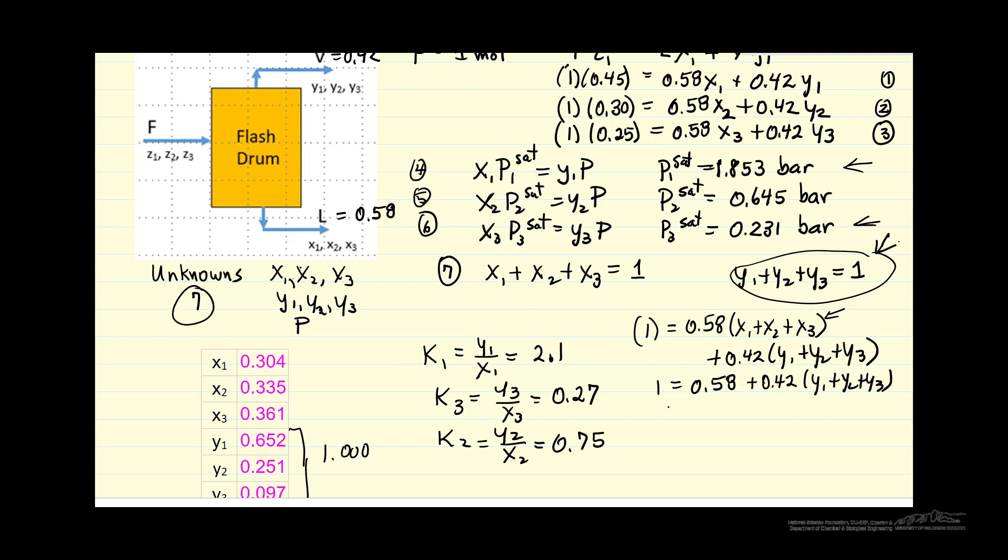And then we have 0.42 times Y1 plus Y2 plus Y3. Or moving the 0.58 to the left side, 0.42 equals 0.42 Y1 plus Y2 plus Y3. So for this equation to be satisfied, this must be 1, showing that it's not an independent equation.